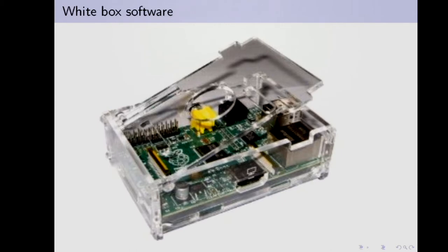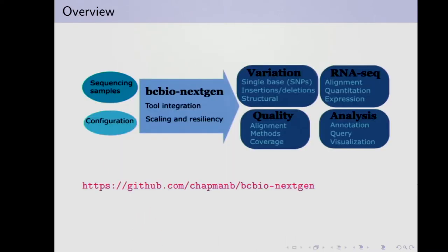It's like a Raspberry Pi in a box — if you want to just treat it as a box and do work with it, that's cool. But if you want to go in and tinker, you can. The tool I'm talking about is called BC Bio Next Gen — I just call it BC Bio because I've been working on this for five years and I did the initial naming. Four or five years ago it was cool to call stuff 'Next Gen,' but now it's not cool anymore — it's the current generation of sequencing. So just call it BC Bio.